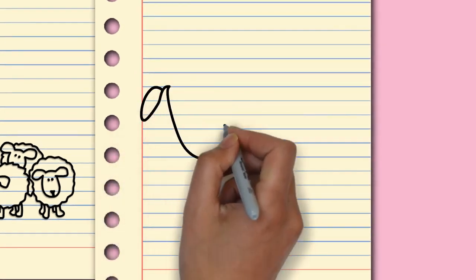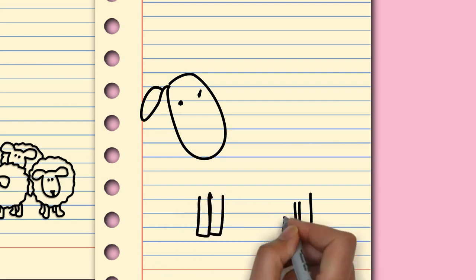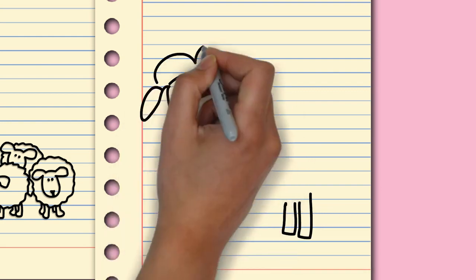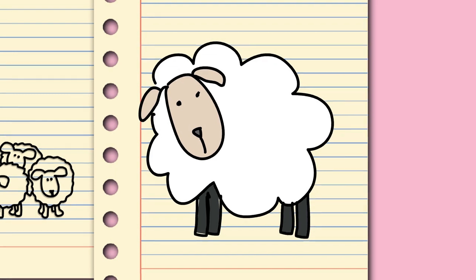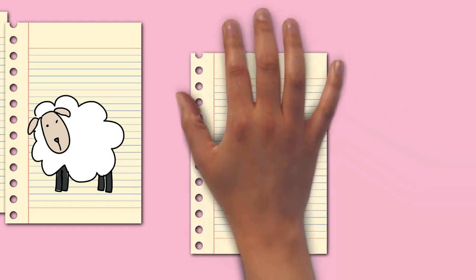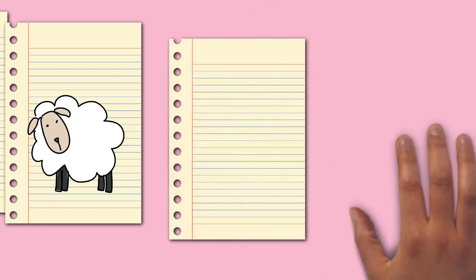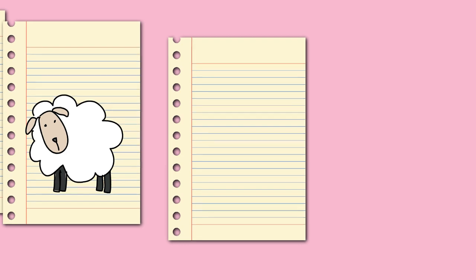Many other specific terms for the various life stages of sheep exist, generally related to lambing, shearing, and herding. Being a key animal in the history of farming, sheep have a deeply entrenched place in human culture and are represented in much modern language and symbolism. Sheep figure in many mythologies such as the Golden Fleece and major religions, especially the Abrahamic traditions. In both ancient and modern religious ritual, sheep are used as sacrificial animals.